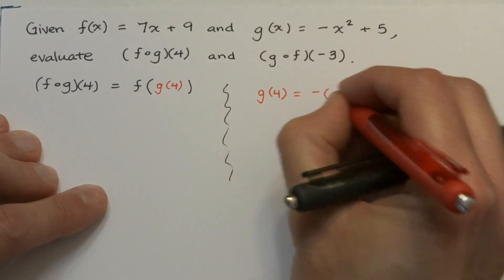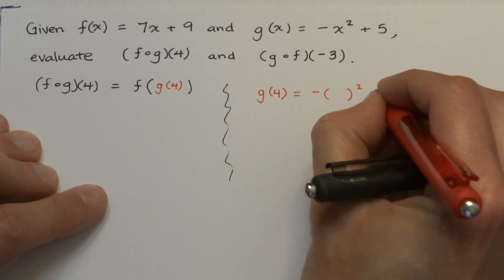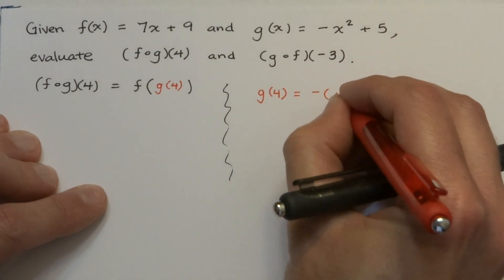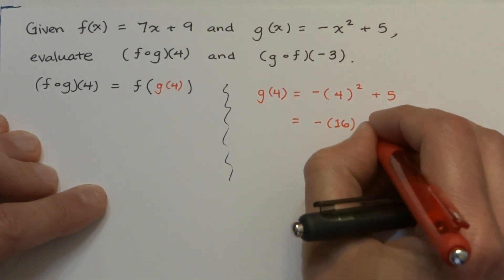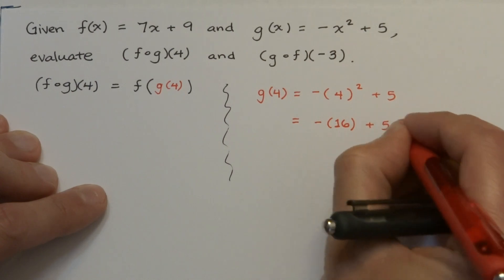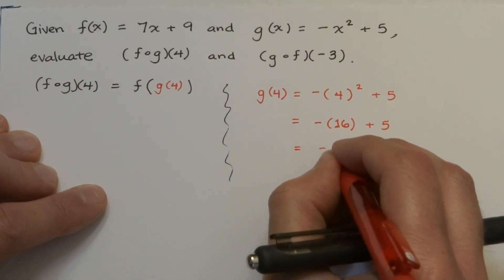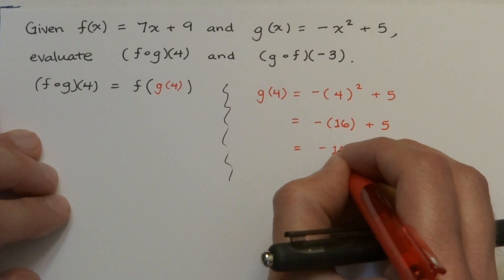g of 4 means negative parentheses 4 squared plus 5, and we're just plugging in the 4. So this is negative, you square the 4 to get 16, make sure the square does not get applied to the negative, combine these two, and you get negative 11.